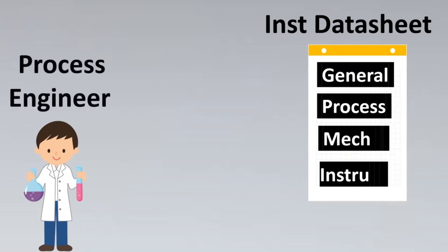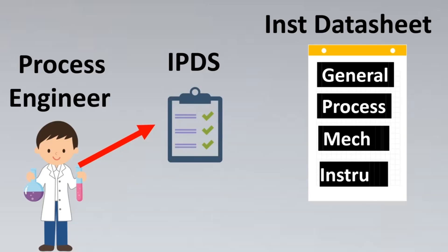Once we are completed with this step, the next step is to get the process data. For this, the process engineer would be very helpful. They prepare a document called IPDS, which stands for Instrument Process Data Sheet, and this is the basis to fill the process section of an instrument data sheet.